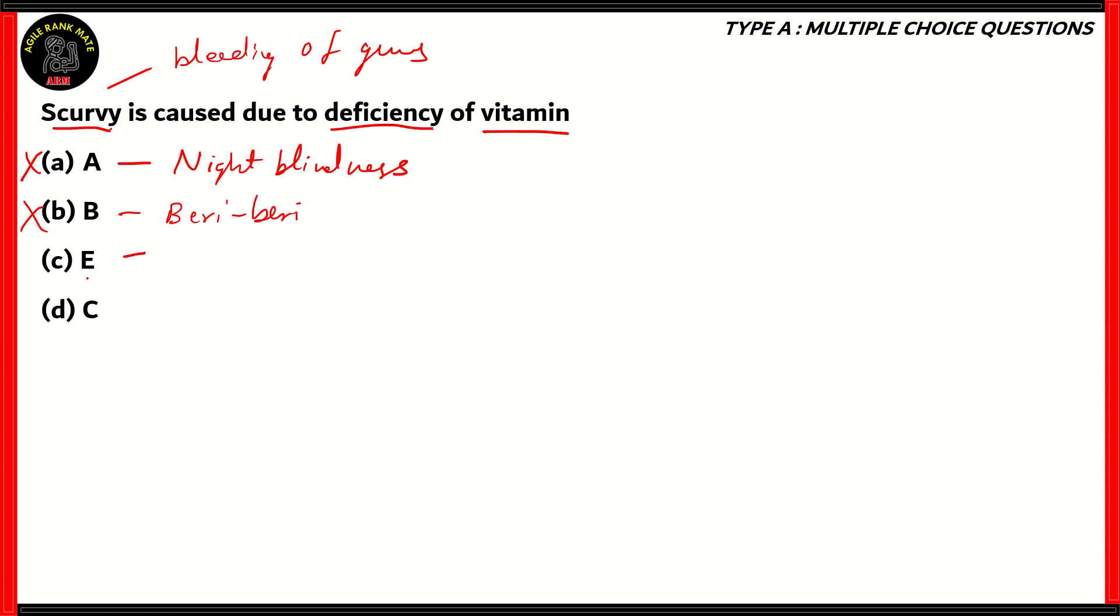What about option C, vitamin E? The deficiency of vitamin E is fatal because it causes miscarriages. Therefore, option E is also incorrect. The right answer is option D, vitamin C. Scurvy is caused due to the deficiency of vitamin C. That's the reason why packing up fruits rich in vitamin C is very important. Otherwise, you may get this disease. It was very common with sailors because they never had fresh fruits or vegetables.